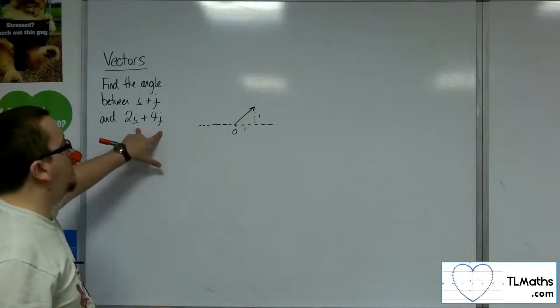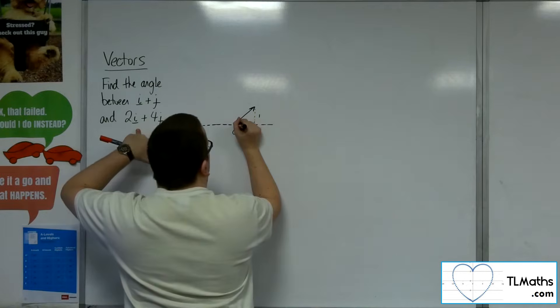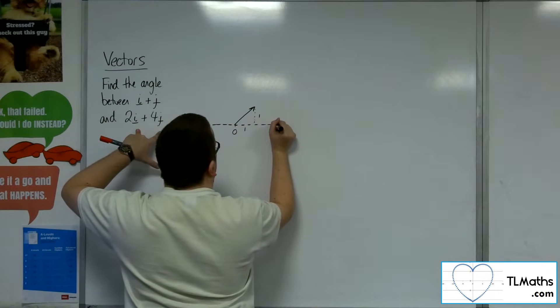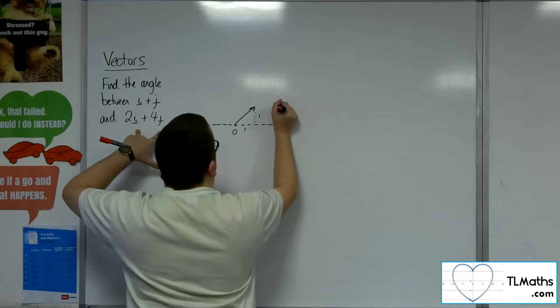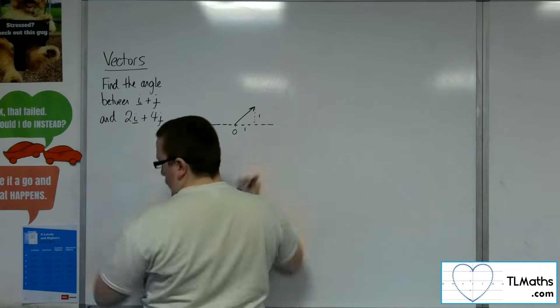Then we've got 2i plus 4j. So 2i, so 1 along, 1 along, so 2 along, 1, 2, 3, 4 up.